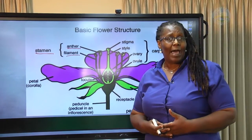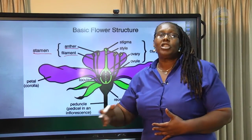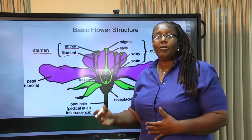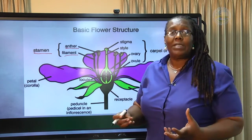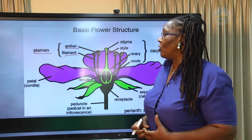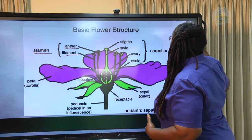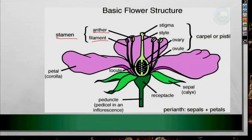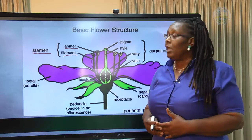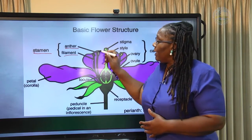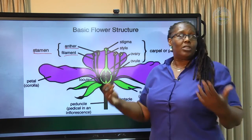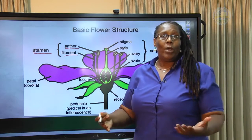A bee passing by would brush on the anther, and pollen grains can then be picked up by the legs of the bee. The filament sticks the anther out, which is very important, because without it the anther would be very close and would not get in touch with the pollinators.